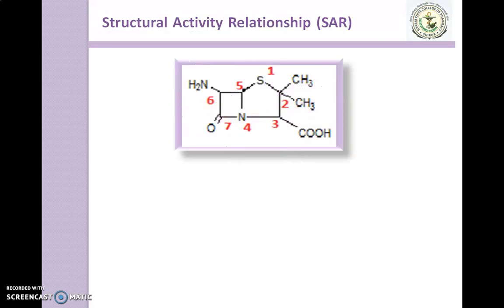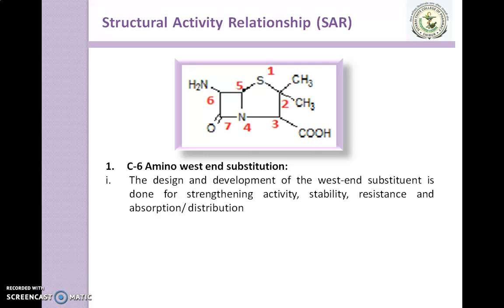This is the general structure of Penicillin. Generally we can do modifications to the Carbon-6 amino side chain substitution. The design and development of the side chain substitution has been aimed at strengthening various weaknesses that have traditionally hampered penicillin in terms of its activity, stability, resistance, and absorption or distribution.